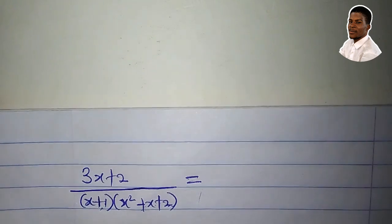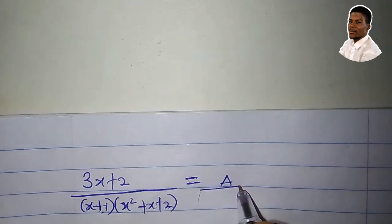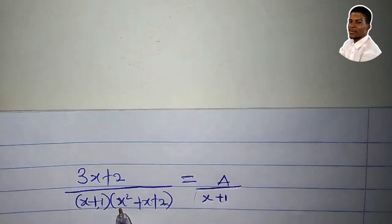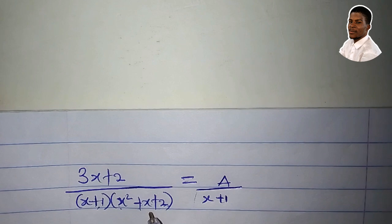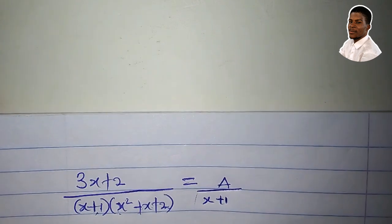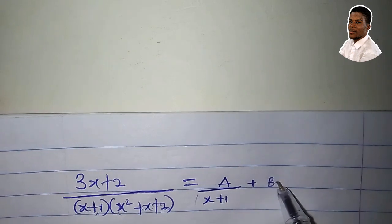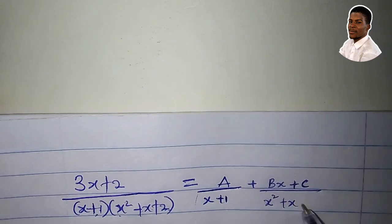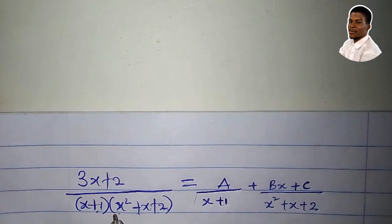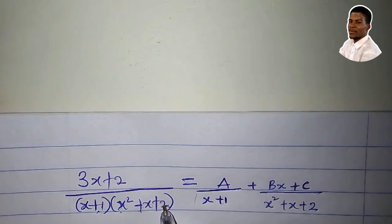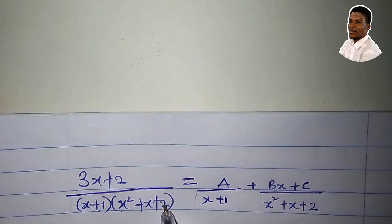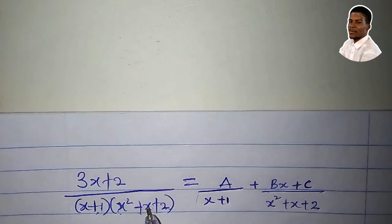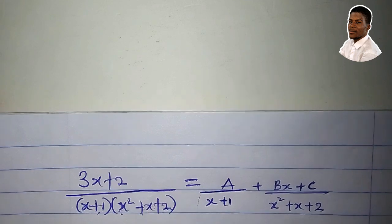Now x²+x+2 is quadratic and it is not factorizable — we cannot factorize it. So what will be the format of the partial fraction? Since it has one linear factor, I will assign a single constant A to the numerator over (x+1). And since it has an irreducible quadratic factor, I will assign a linear factor bx+c to the numerator over x²+x+2. Think of two numbers that multiply to give 2 and add to give 1 — it's not possible under the real numbers, hence it is irreducible.